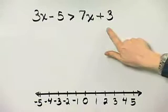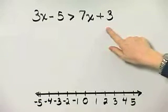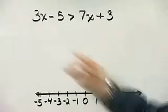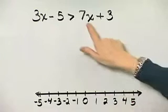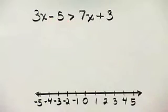Let's solve this inequality. How do we do so? Remember, let's move variable terms to one side. I'll begin then by subtracting 7x from both sides.